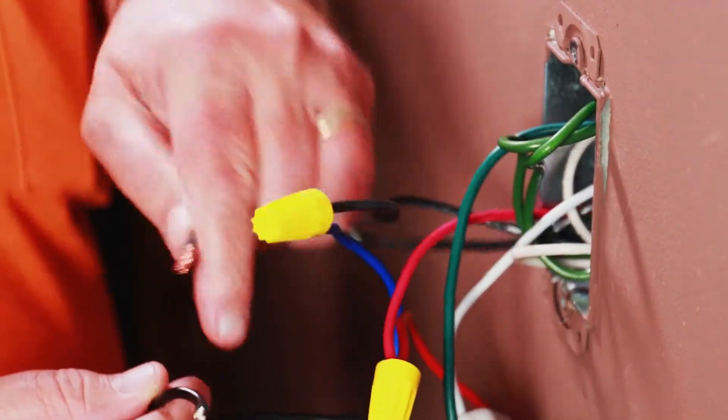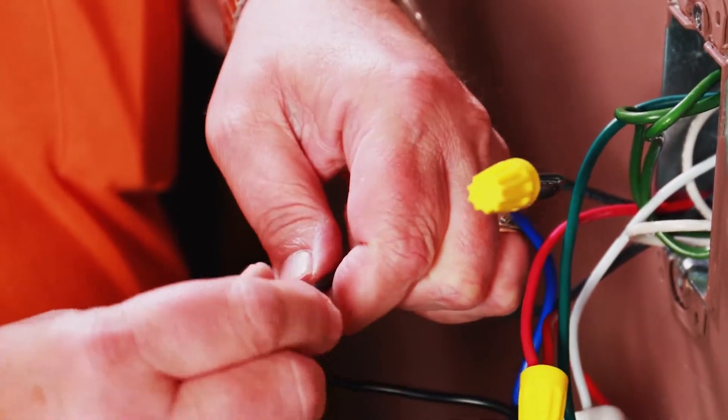Finally, connect the hot power feed, which is the traveler where the jumper was installed earlier, to the black wire on the Ascend.